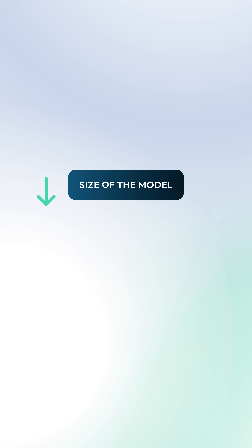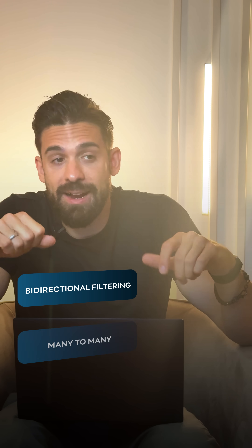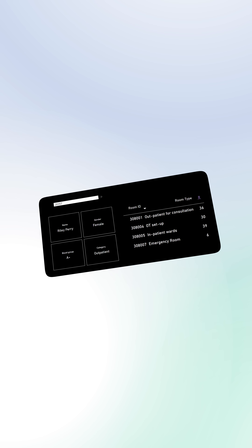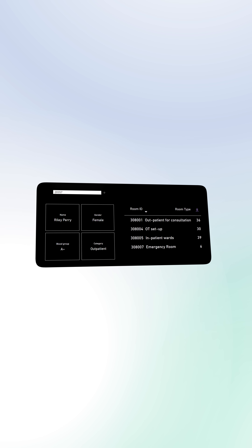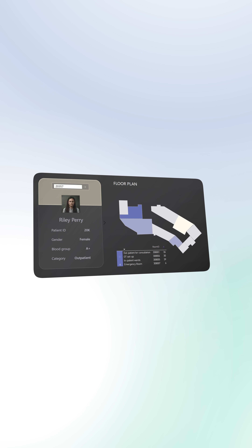What columns do you really need? Which ones take the most space? How can you reduce the size of your model by reducing cardinality? Do you need bi-directional filtering? Do you need many-to-many relationships? You start to understand how to optimize your model, and on the visualization side you can basically turn any native visual into the visual that you have in mind.